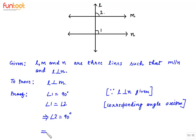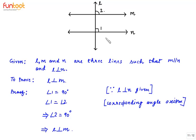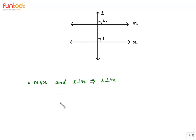This implies that L is perpendicular to M also, which is what we had to prove. This proof is a special case of the corresponding angle axiom where one of the corresponding angles is 90 degrees, so the other is also 90 degrees because the lines are parallel. In summary: if M is parallel to N and L is perpendicular to N, then L is perpendicular to M also.